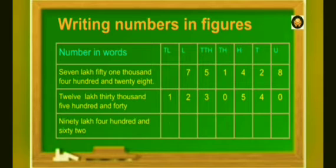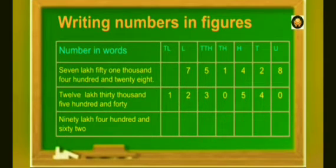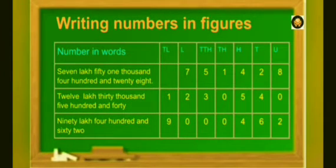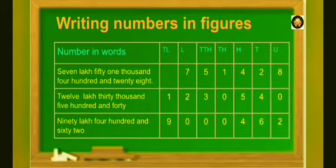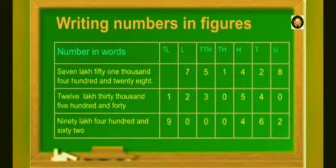Now, let's take one more example. In this figure, there aren't any lakhs, 10,000, or 1,000, so we write 0 in those places. Since there are 90 lakhs, meaning 9 ten-lakhs, we write 9 in the 10-lakhs place. Similarly, there are 462, so write 4 in the hundreds place and 62 means 6 tens and 2 units, so write 6 in the tens place and 2 in the units place.